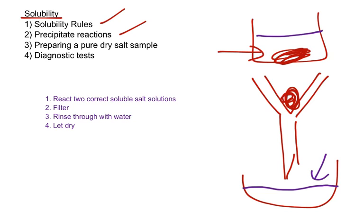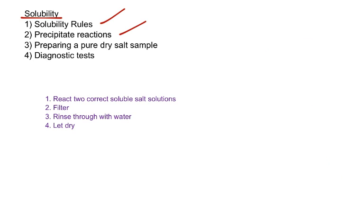You then rinse through with water, and that means any sort of dissolvable impurities in that salt will dissolve into the water. The water will run through and wash it out into the petri dish below, meaning that we may get a purer sample of insoluble salt here. And finally, you just leave it to dry. And that's how you produce a pure dry salt sample.